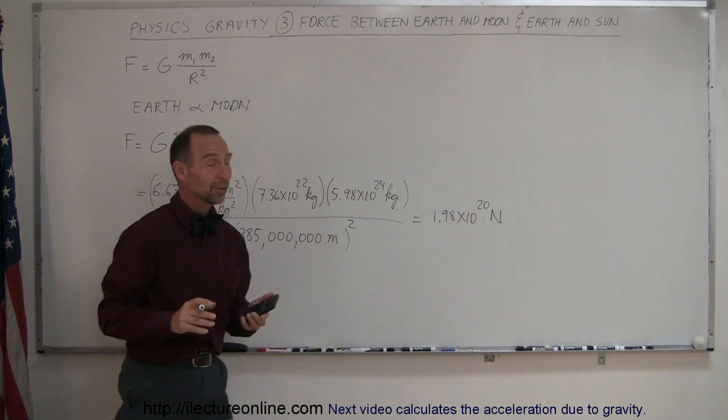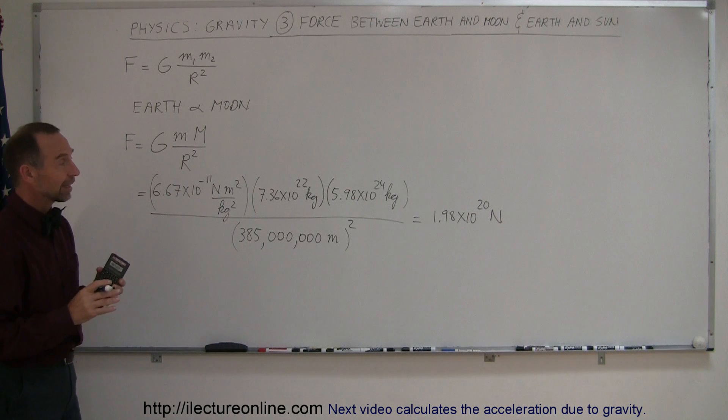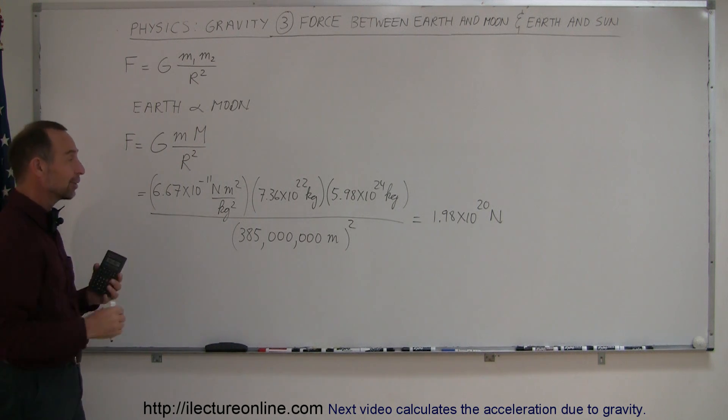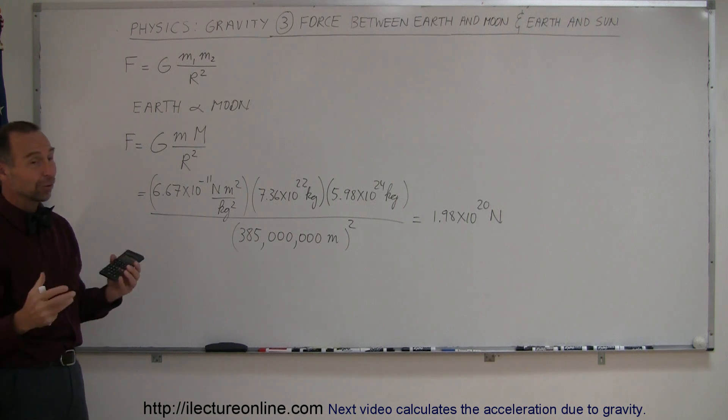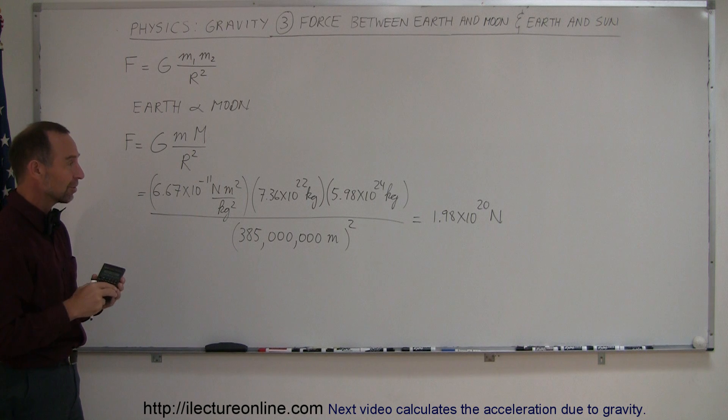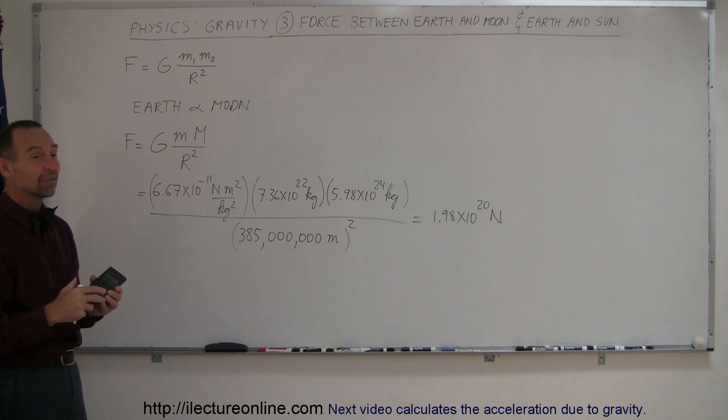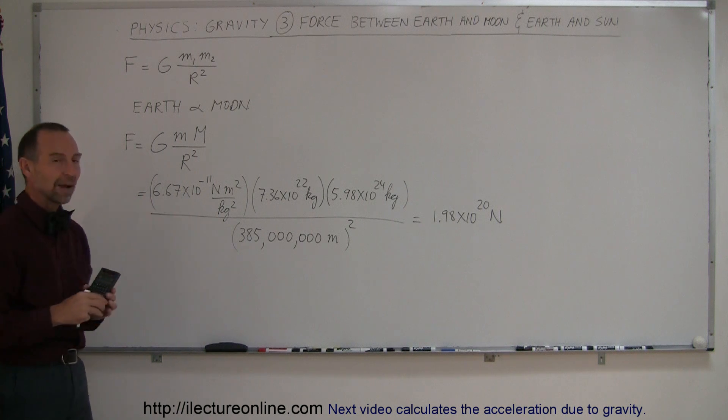That's the force between the Earth and the Moon. That's the force that keeps the Moon in orbit around the Earth. Without it, the Moon would shoot straight, like a straight arrow, into space according to Newton's first law. All objects, unless a force acts upon it, will move in a straight line with a constant velocity. The Moon doesn't do that because the Earth attracts it.